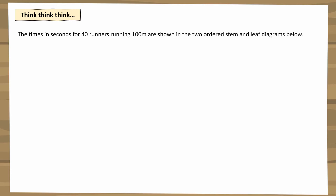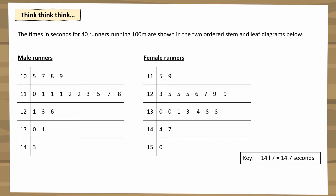Let's think about this. The time in seconds for 40 runners running 100 meters are shown in two ordered stem and leaf diagrams below. We have male runners with one stem and leaf diagram and female runners with a separate one. The question is: how else could we show this information on a stem and leaf diagram?